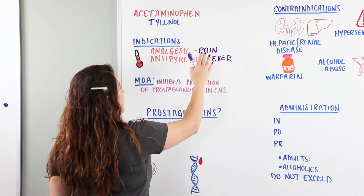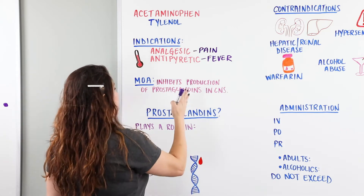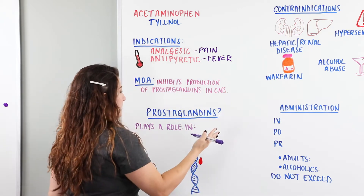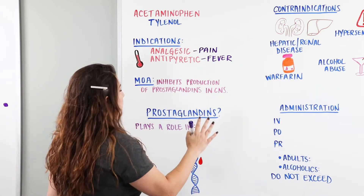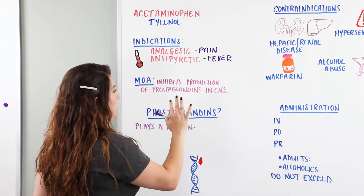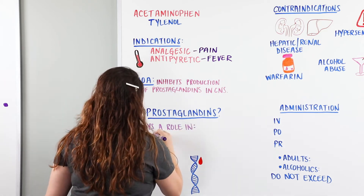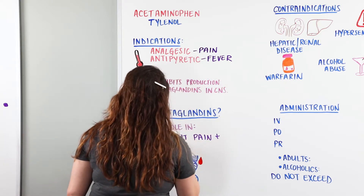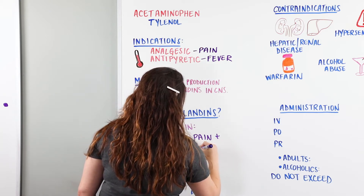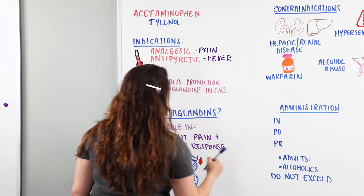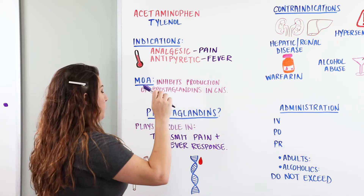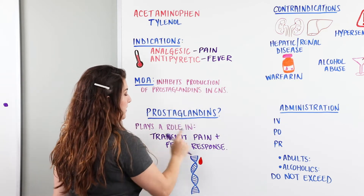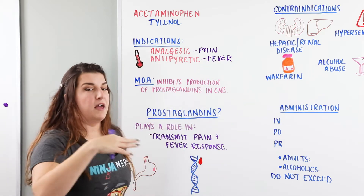We give this medication primarily to treat pain or to treat a fever. The mechanism of action is to inhibit the production of prostaglandins in the central nervous system. Prostaglandins play a role in our body to help transmit pain and fever response, so we can give Tylenol to inhibit this reaction and stop producing either the pain or the fever.